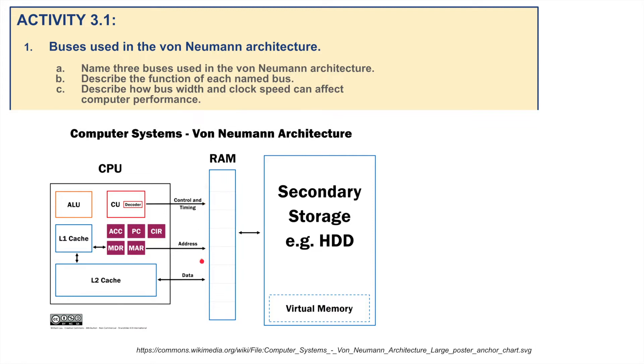Name three buses. Well I've got them listed here: Data Bus, Address Bus, and the Control and Timing Bus. So there they are: Data Bus, Address Bus, Control Bus and Timing Bus. It says name three, but what do they do?